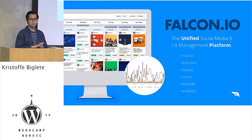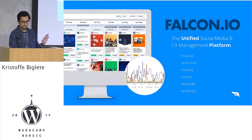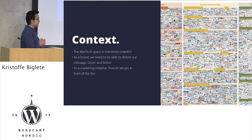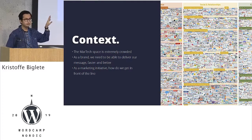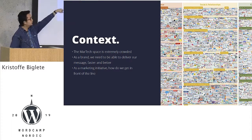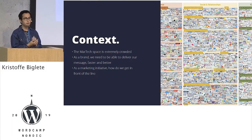Just to provide some context: what does Falcon.io do? It's a SaaS company. We provide a platform to handle social media in a single platform — from publishing, advertising, engaging, et cetera. Context is important here, because part of the problem is why did we want to increase our mobile traffic in the first place? This is the marketing technology landscape 5,000 graph. It tells us that these are all our competitors. We're one small dot in the space, and we have, as a brand, to be vocal and deliver our message fast and better.